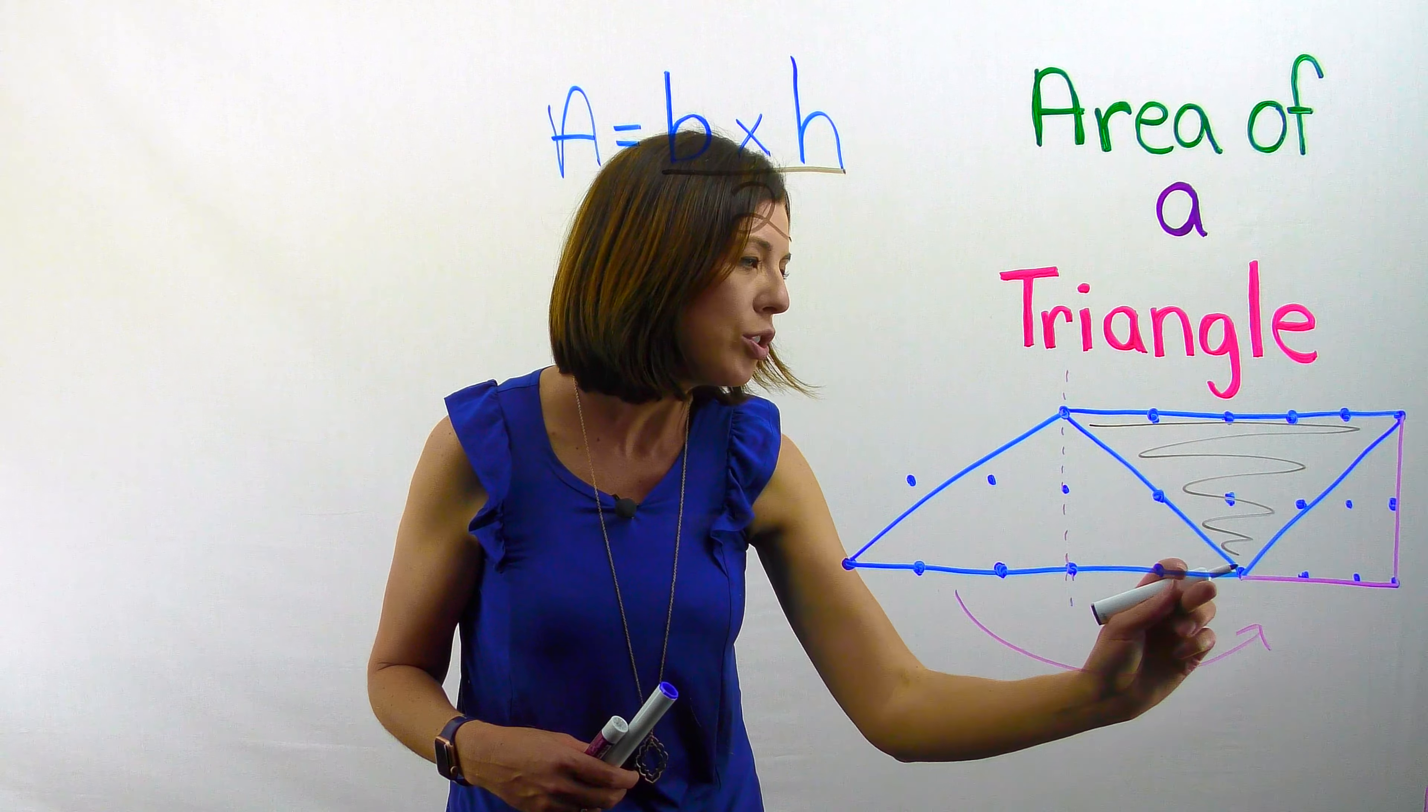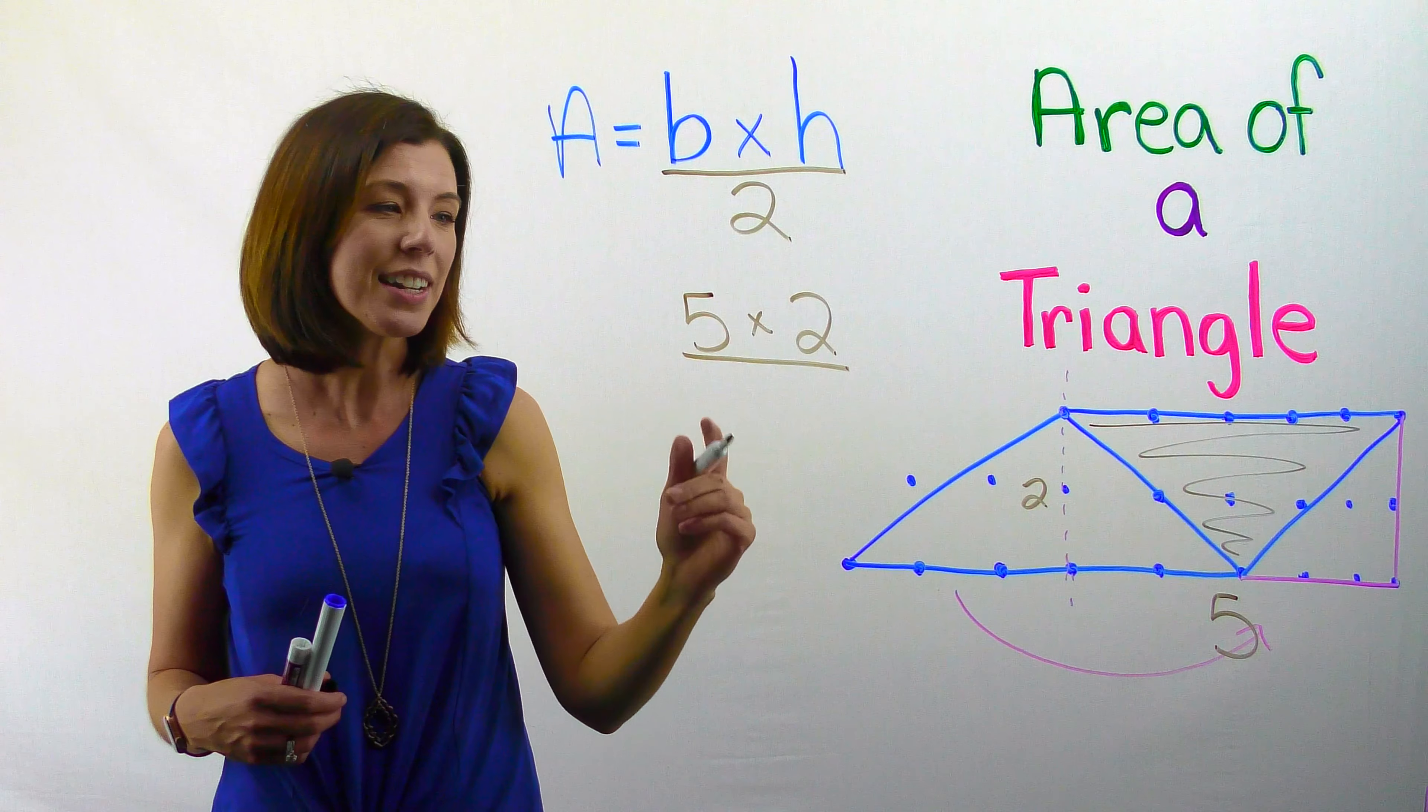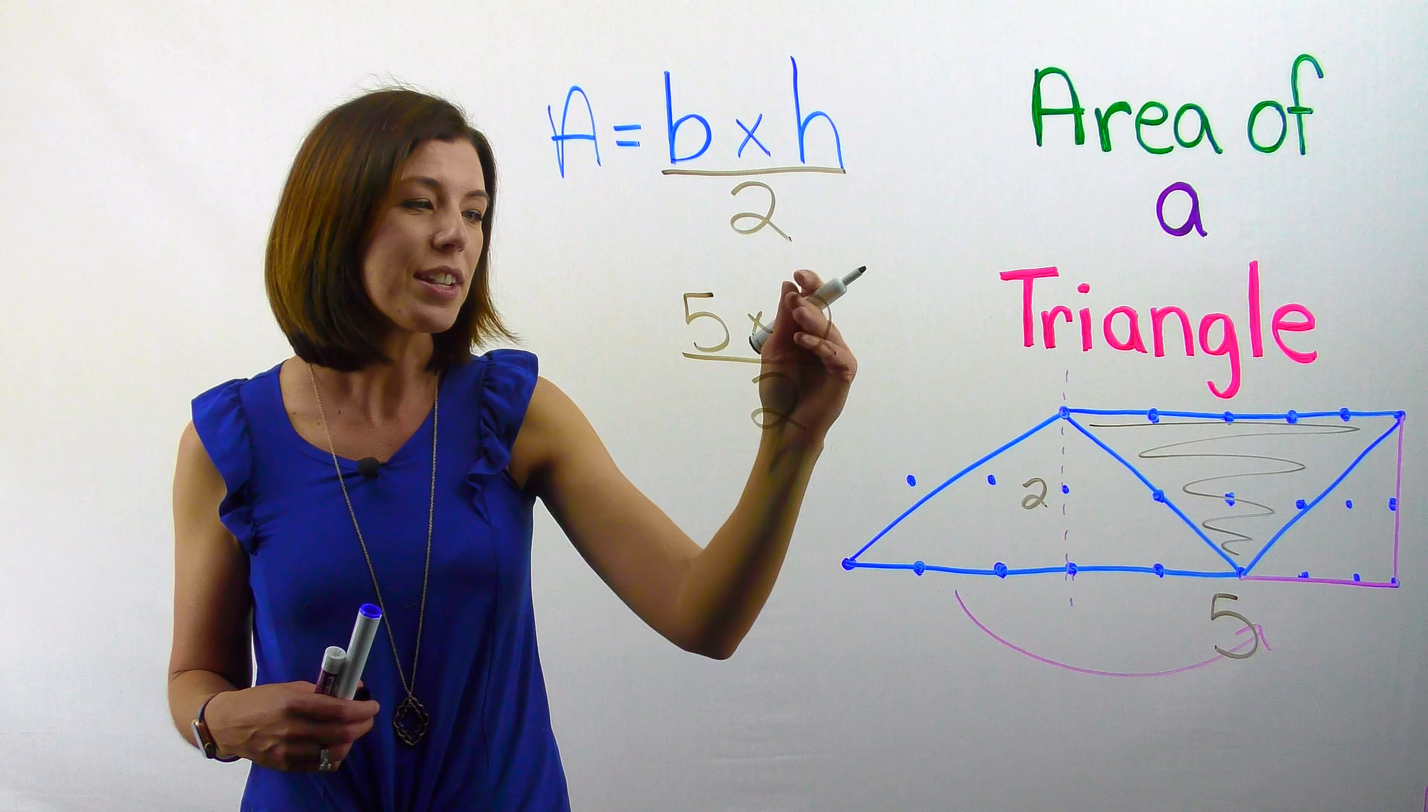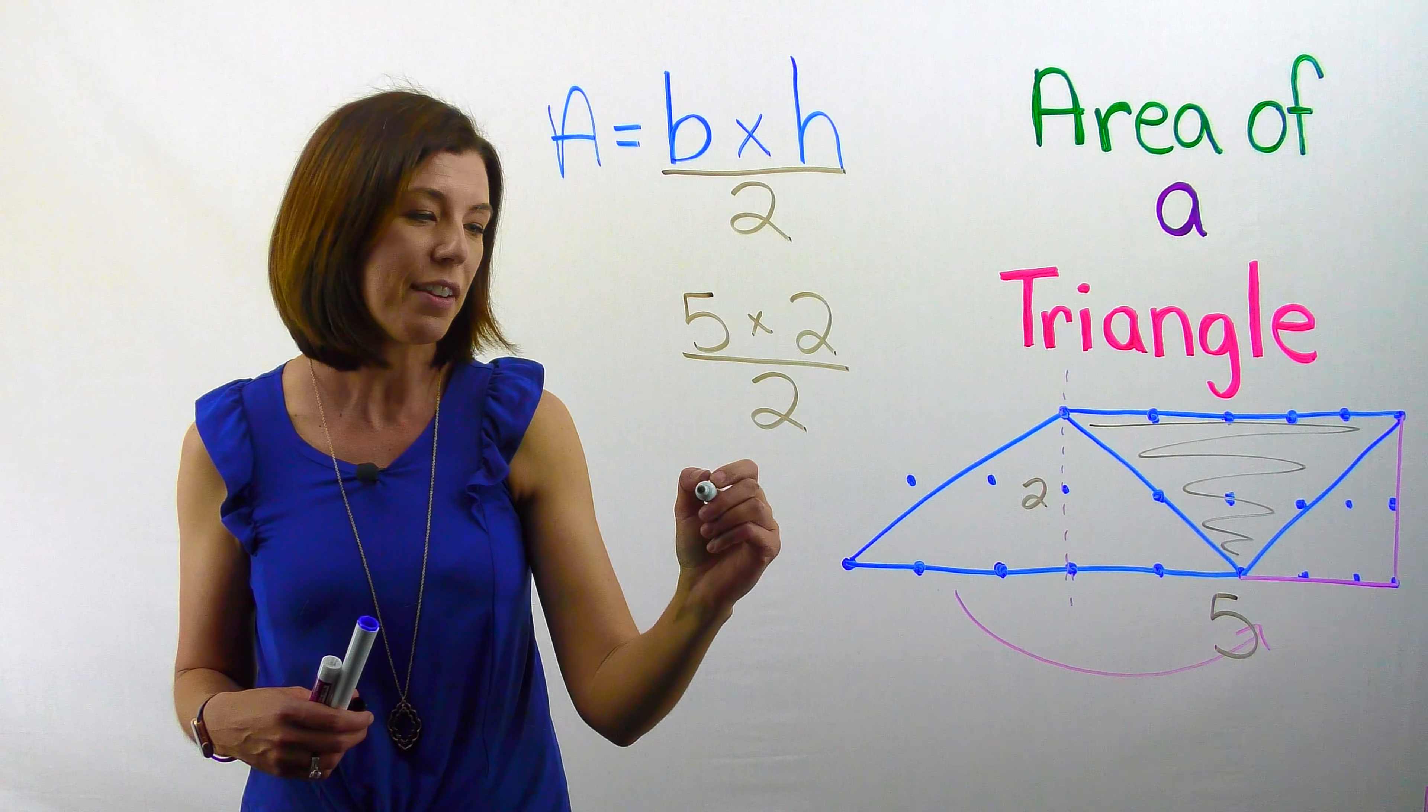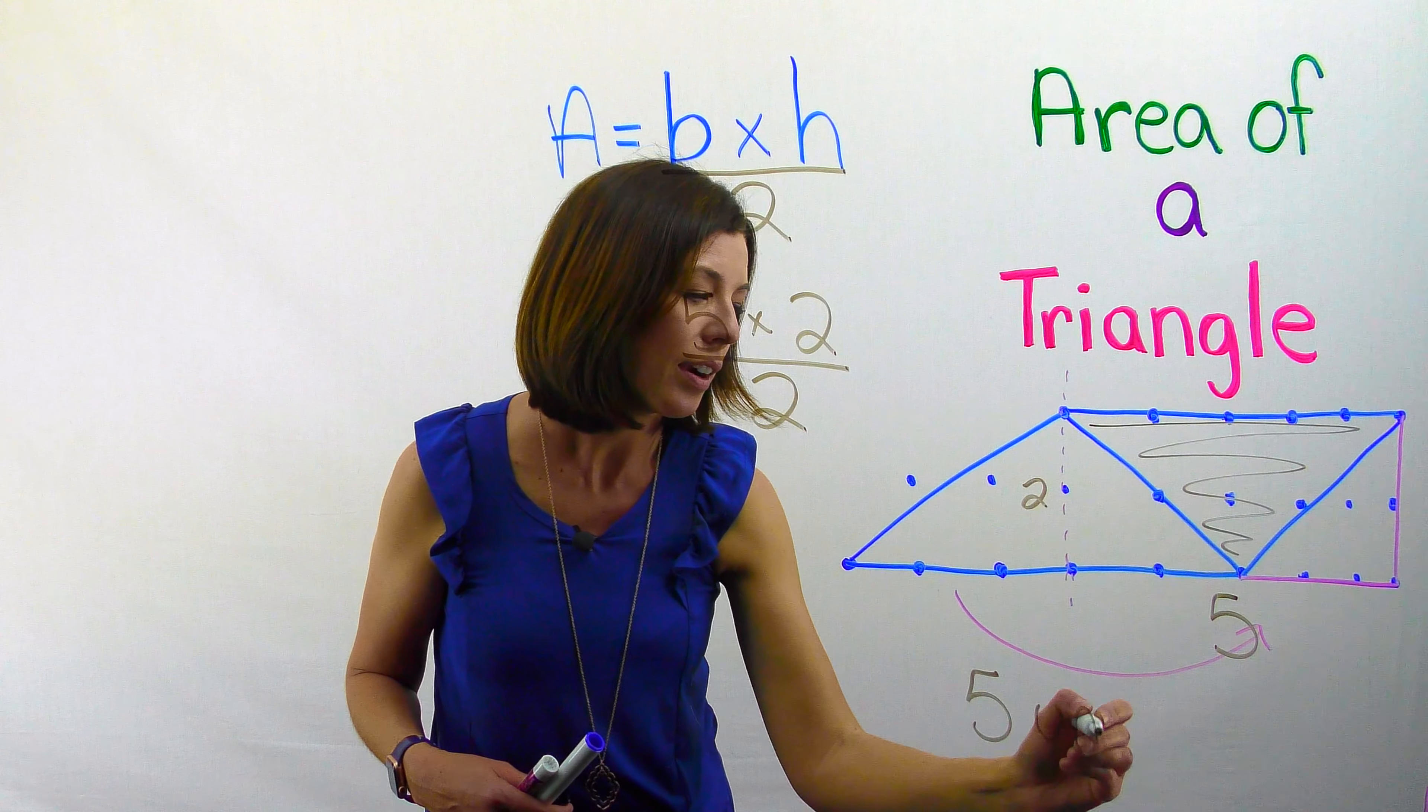So five times two gives me ten. And then I need to take that and divide that in half. So I have ten divided by two, which gives me five. So my area for this is five square units.